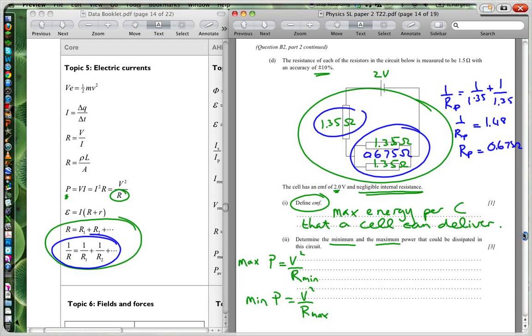That's the equivalent resistance of these two. And now I've got to add that to get the total. They are in series. So I use this formula. I just add the two together. So I add plus 1.35 to that. And I get an R total of 2.025 ohms. And therefore my power max is going to equal v squared. My v is equal to 2. So it's going to be 4 divided by 2.025. And I get about 2 watts.